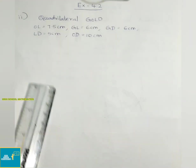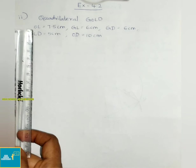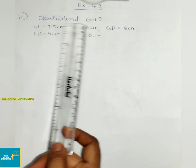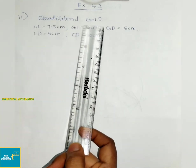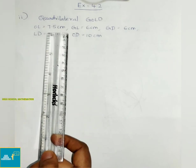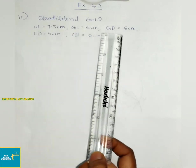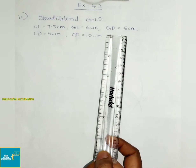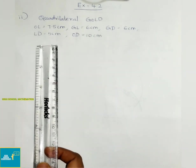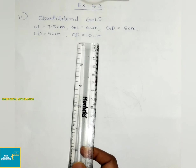Exercise 4.2, second sum: Construct quadrilateral GOLD where OL equals 7.5 cm, GL equals 6 cm, GD equals 6 cm, LD equals 5 cm, and OD equals 10 cm.